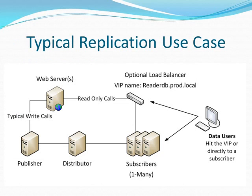If you look at this picture here, you've got your publisher server, your remote distributor, and then your subscribers out here. You have your app servers hitting a load balancer — it's got a VIP name like 'ReaderDB' — and it load balances against your three subscriber servers. Your power users, developers and whatnot, you either point them to ReaderDB or directly to the subscriber, whatever makes sense for your environment. Even Microsoft has got load balancing on server products if you can't afford a network load balancer. The whole idea is these subscribers are now doing all the work that the publisher used to do in the past.